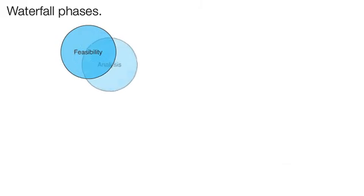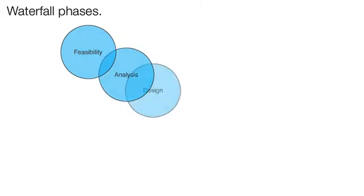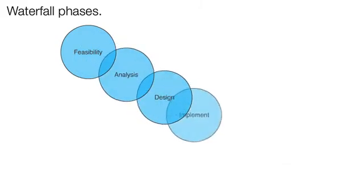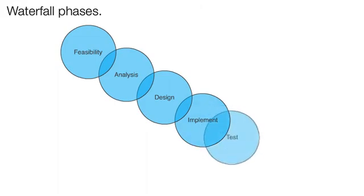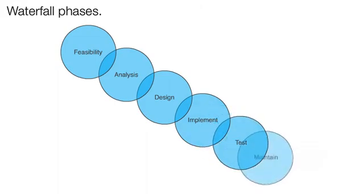The waterfall process is linear and progresses sequentially. The main lack of iterative development is seen as a major weakness according to Purcell.